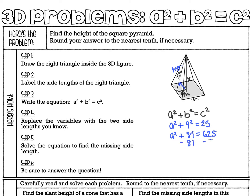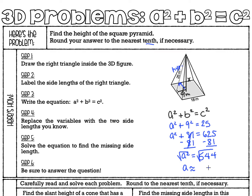To solve this, we subtract 81 from each side before finding the square root, because we need that variable by itself first. I'll use my calculator — 625 minus 81 gives me 544. Now I find the square root on each side. The square root of 544 gives a long decimal, and we round to the nearest tenth, so I should use an approximation sign since I'm rounding. The height is approximately 23.3 meters.